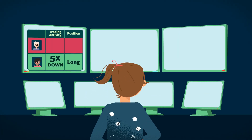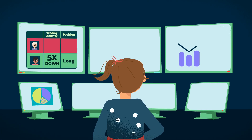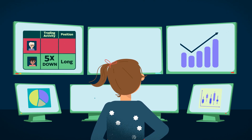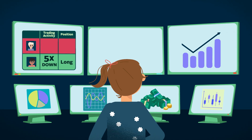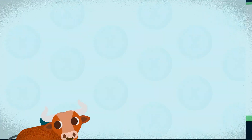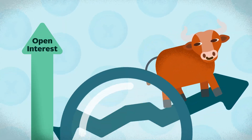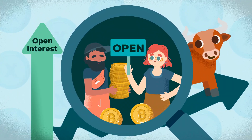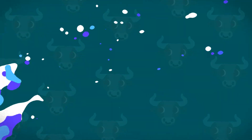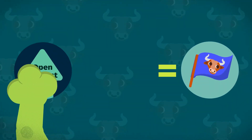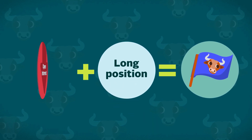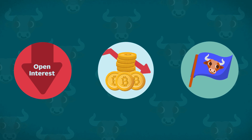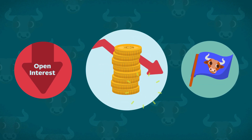It's worth noting that open interest is rarely used in isolation. More commonly, it's used by traders in conjunction with other metrics, such as price, to analyze market trends. When open interest increases during an uptrend, it could mean that new money is entering the market as more people open new positions — a bullish signal if driven by new longs. However, if open interest decreases during an uptrend, it could mean a weakening trend and money leaving the market.